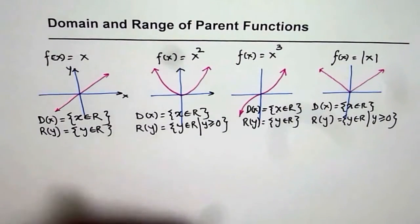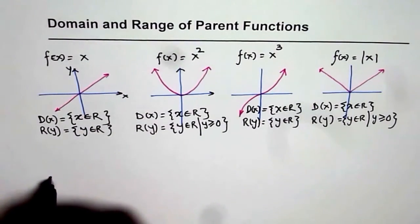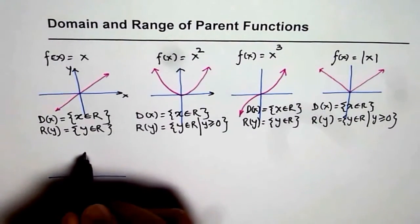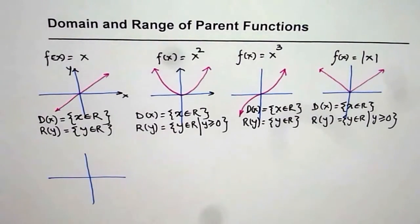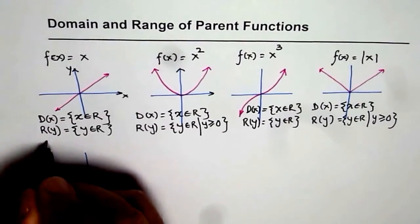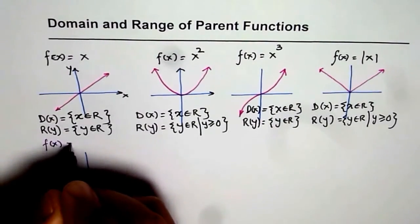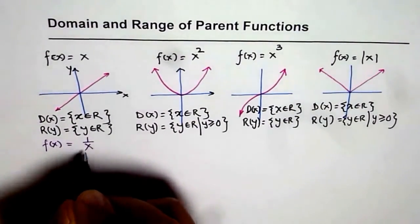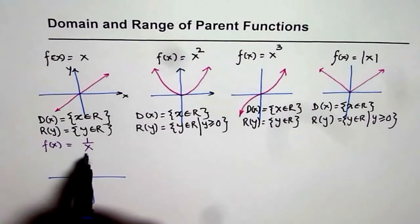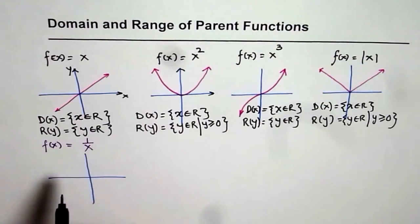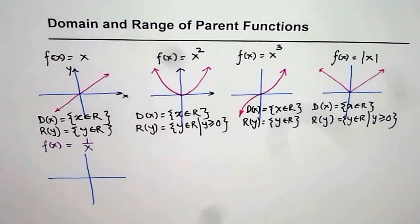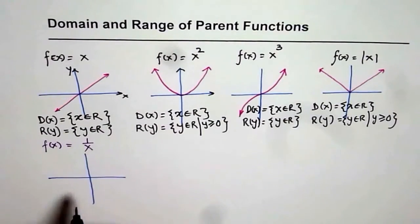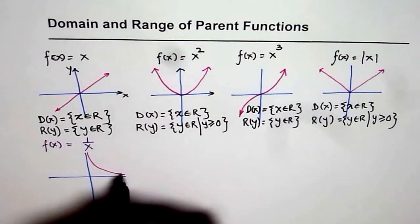Let me take the example of a reciprocal function: f of x equals to 1 over x. As you can see, x is in the denominator and x cannot be 0, since you cannot divide by 0. So there is a restriction. Domain is all real numbers, but it cannot be 0. If you sketch this function, it looks like a hyperbola.